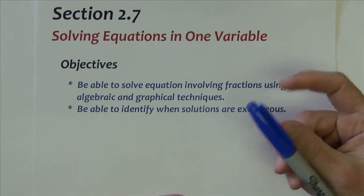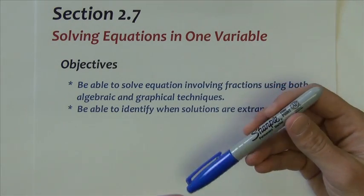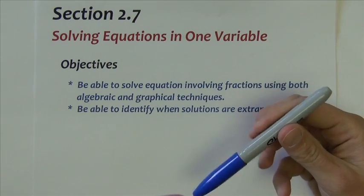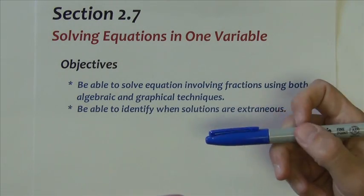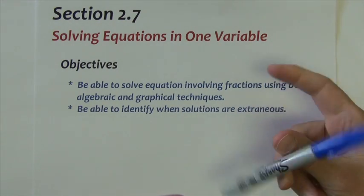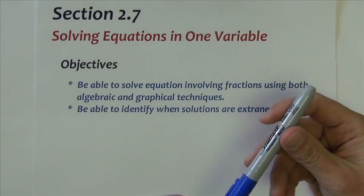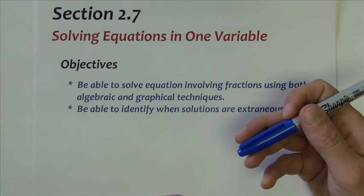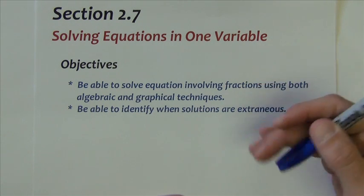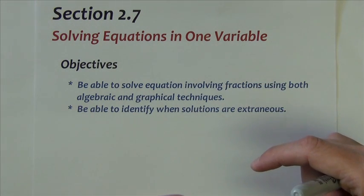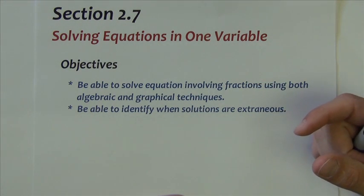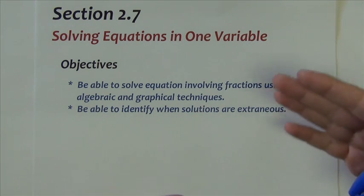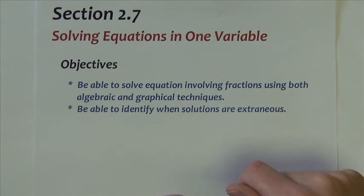In section 2.7, we're going to look at how we solve equations in one variable, but specifically how we solve rational equations in one variable. So sticking with the second half of this chapter's theme, beginning with rational functions in the last section, we're going to look mainly at rational equations now in this section. So equations that have fractions in them, fractions that involve the variable x located on top and bottom of the fraction, and how do we solve those?